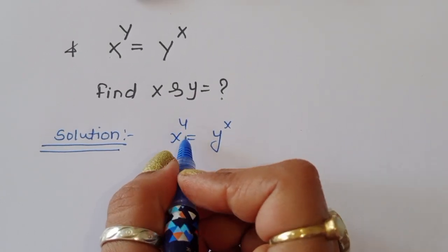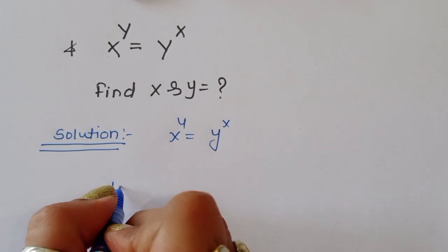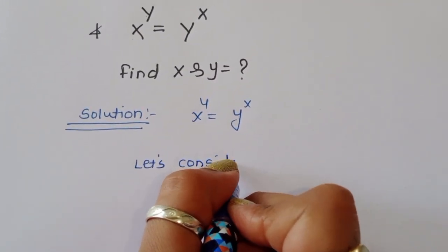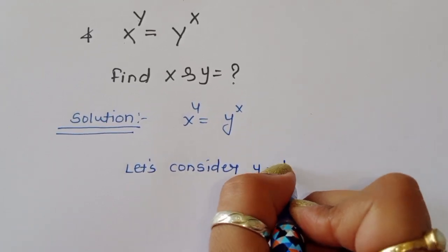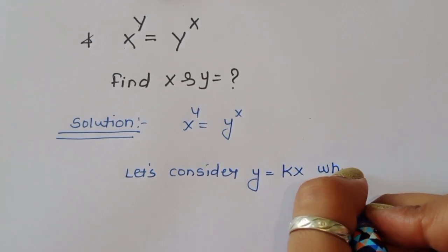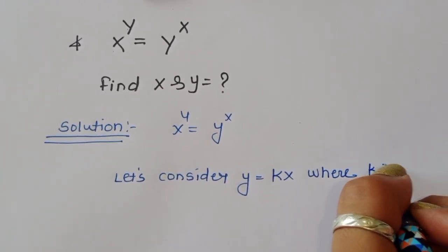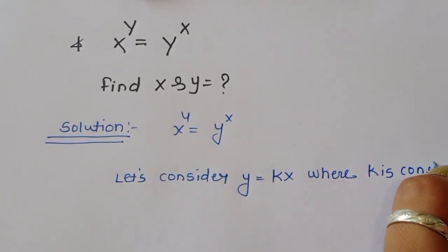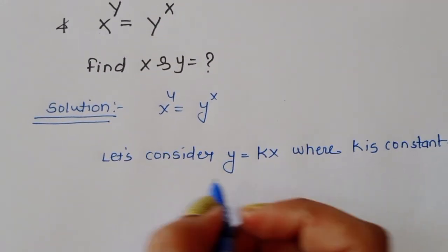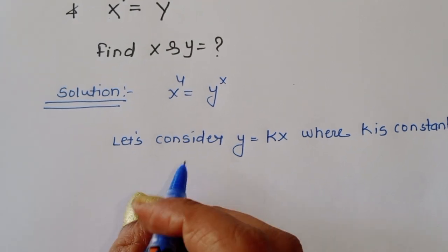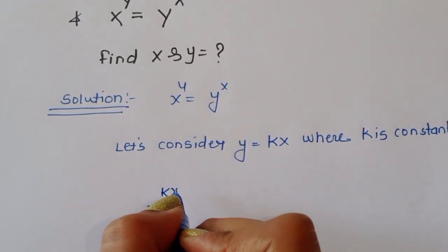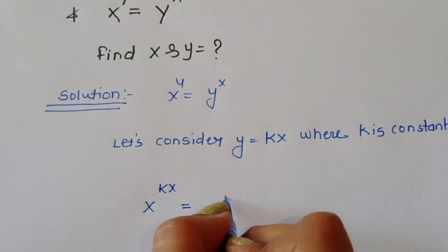Given x^y = y^x, we consider one substitution: let y = kx, where k is a constant. Let's start our solution. x^(kx) is equal to (kx)^x, since y = kx.